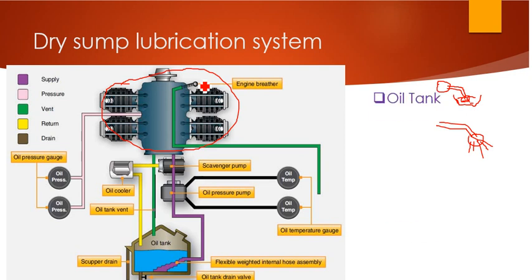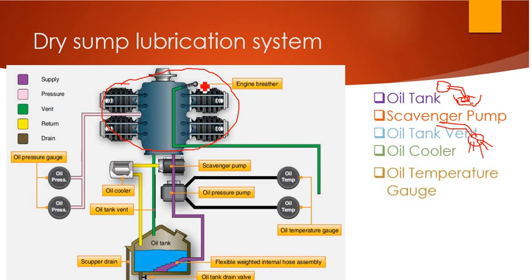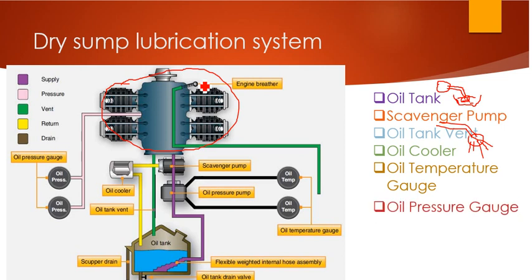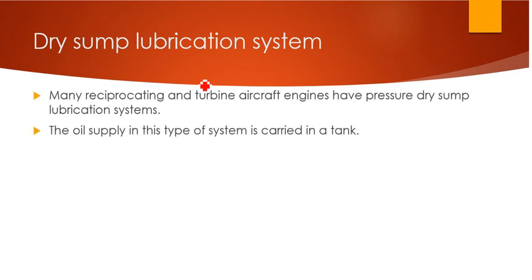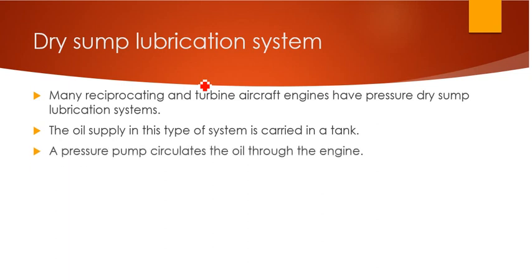The parts in the dry sump lubrication system are: an oil tank, a scavenger pump, an oil tank vent, an oil cooler, oil temperature guards, oil pressure guards, and an engine breather. Many reciprocating engines and turbine engines use this dry sump lubrication system because it provides an easier and more effective cooling and lubrication system.